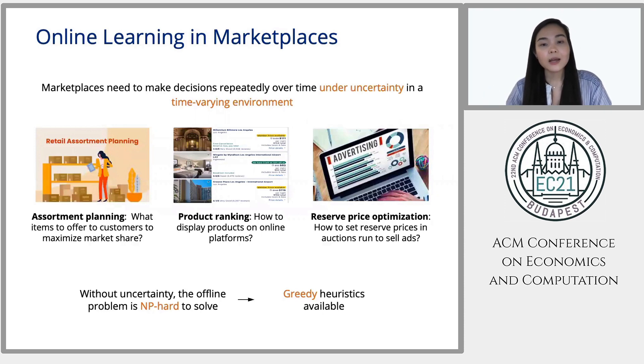So there are three common fundamental challenges that all of these examples face. The first one is uncertainty, because they need to learn the best course of actions without knowing the demand function. The second one is time varying, because the underlying environments keep on changing over time. And the last one is combinatorial. So even without uncertainty, the offline problems are NP hard to solve. But if you look closely, there are actually greedy heuristics available for all of these examples.